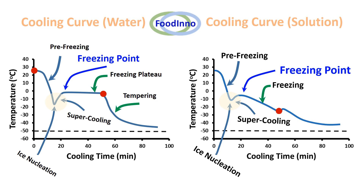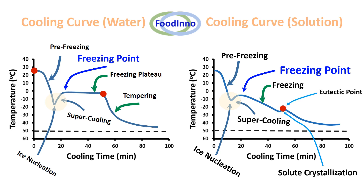As the freezing process continues, the solution becomes concentrated and solute crystals could form — we observe the eutectic point. After that, we observe tempering as the temperature decreases to the equilibrium point with the cooling environment.